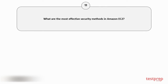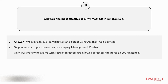Question number 11: What are the most effective security methods in Amazon EC2? 1. We may achieve identification and access management using Amazon Web Services. 2. To gain access to your resources, we employ management control. 3. Only trusted networks with restricted access are allowed to access the ports on your instance.